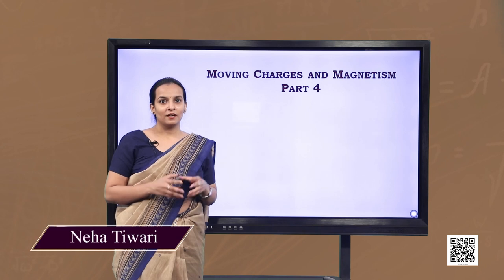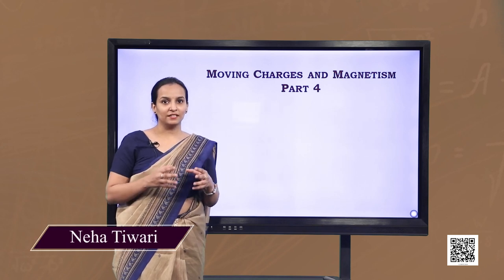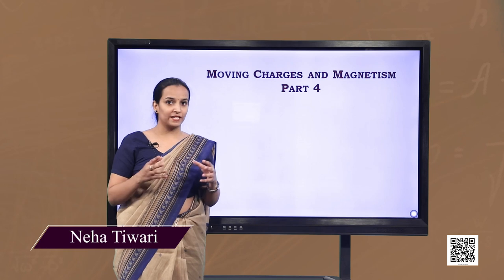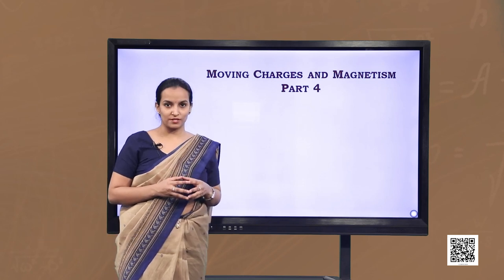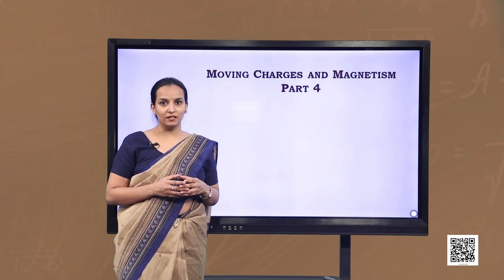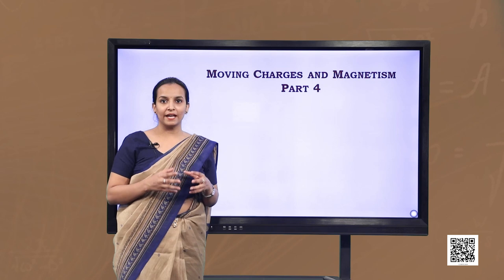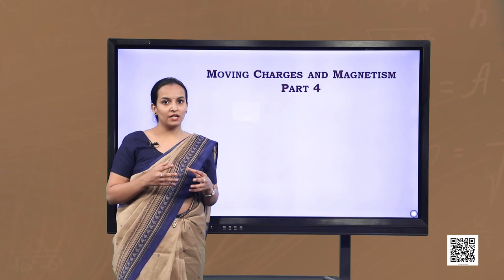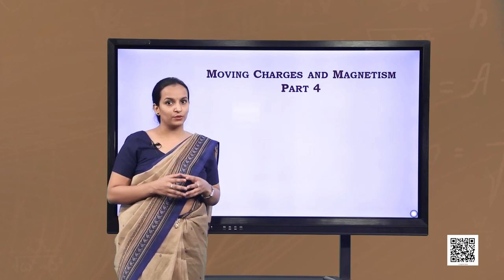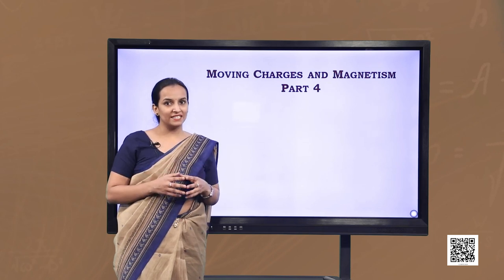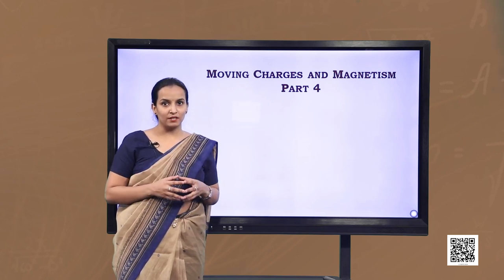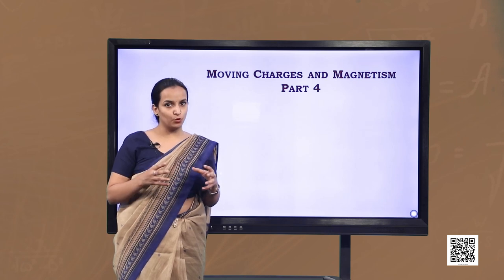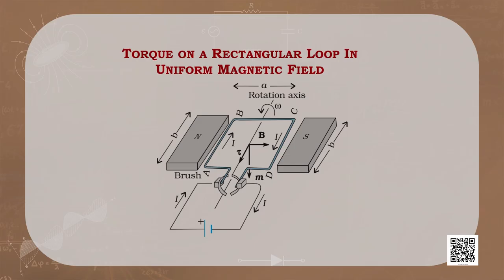Welcome viewers. We already know that a current carrying conductor placed in a magnetic field experiences a magnetic force. In today's program we will extend our learning and understand what happens when a rectangular current carrying loop is placed in a uniform magnetic field, how this concept is employed in the galvanometer, and also understand atomic magnetic moment.